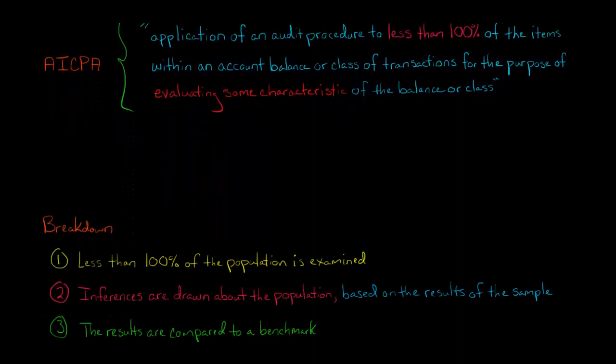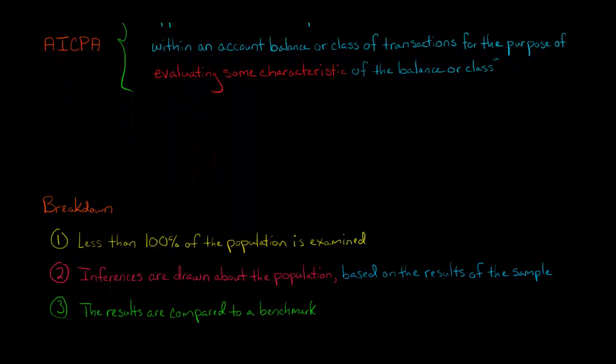Let me break it down to make it a little bit simpler. We've noted that you're going to be looking at less than 100% of the population. Sometimes you might have an account balance or something where there's a very small number and you could look at it, or maybe there's a list of just five purchases if we're talking about a class of transactions. But a lot of times in auditing you cannot look at 100% of the population and so you're going to have to look at a sample, a subset of the population.